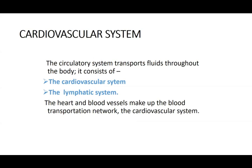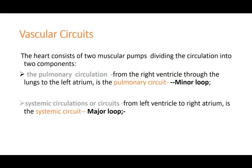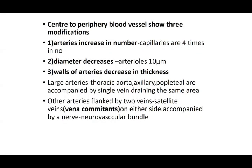The circulatory system extends throughout the body and consists of the cardiovascular system and the lymphatic system. The heart and blood vessels make up the major portion of the cardiovascular system. There are two vascular circuits: the minor loop, which is the pulmonary circulation from the right ventricle through the lungs back to the left atrium, also called the pulmonary circuit; and the major loop, the systemic circulation from the left ventricle to the right atrium.